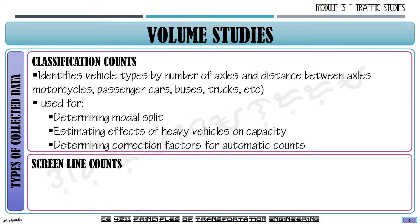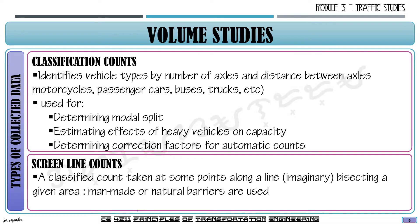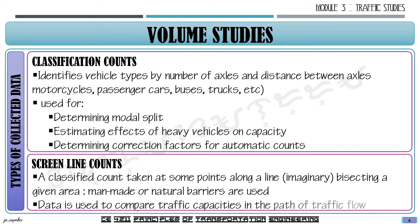The next type is screen line counts. A screen line count is a classification count taken at an imaginary line which bisects a given area. The imaginary line could be either a man-made or a natural barrier. You identify the imaginary line as your counting point, and the data gathered from a screen line count is used to compare traffic capacities in the path of traffic flow.